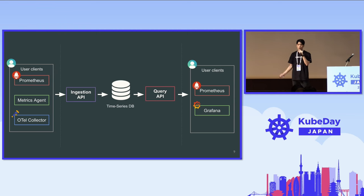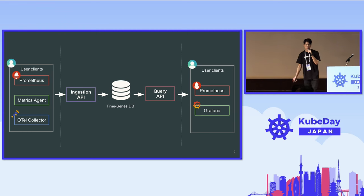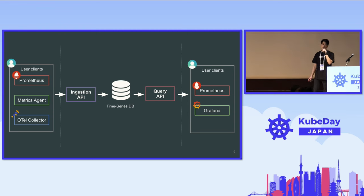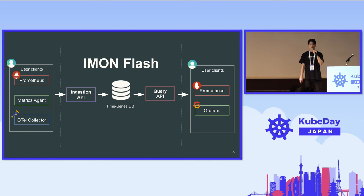Additionally, we provide a query API that is a PromQL-compatible API. So this means you can see your data via Prometheus or Grafana to show up your data as graphs and dashboards. This platform is called I'm a Flash within the company.